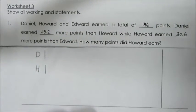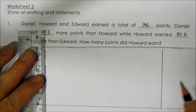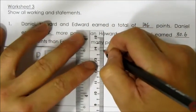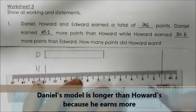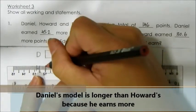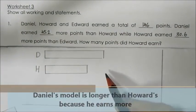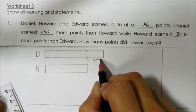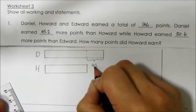Always remember, when we draw a comparison model we have to start on the same line so that it is easy for us to compare. For Daniel, he will have a longer model because he earned more points than Howard. The longer portion over here represents the extra points that Daniel earned more than Howard, which is 45.2.